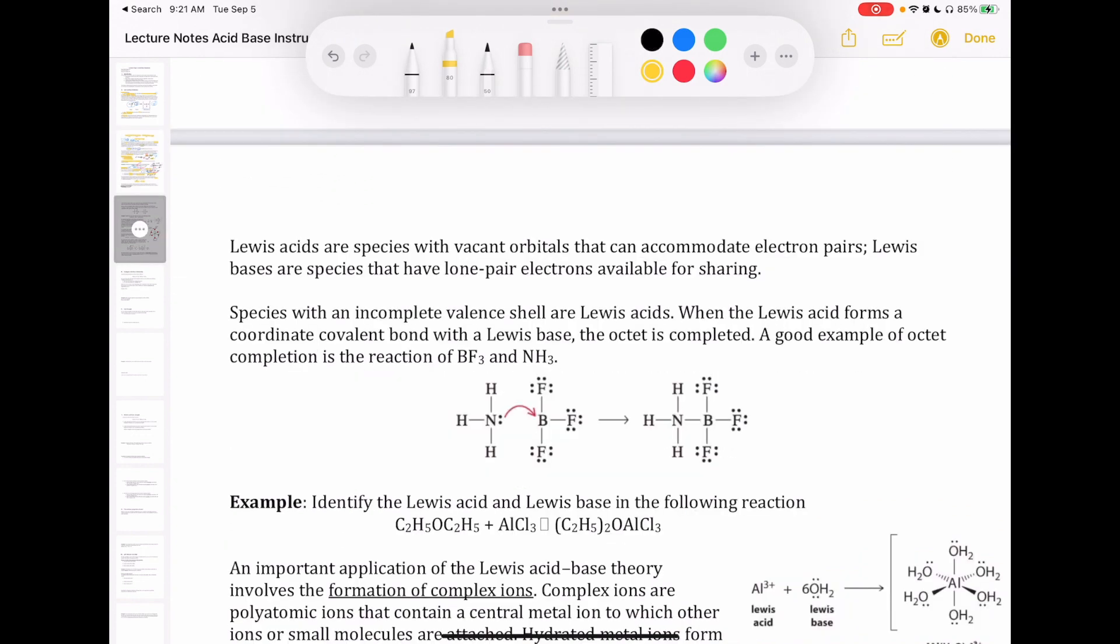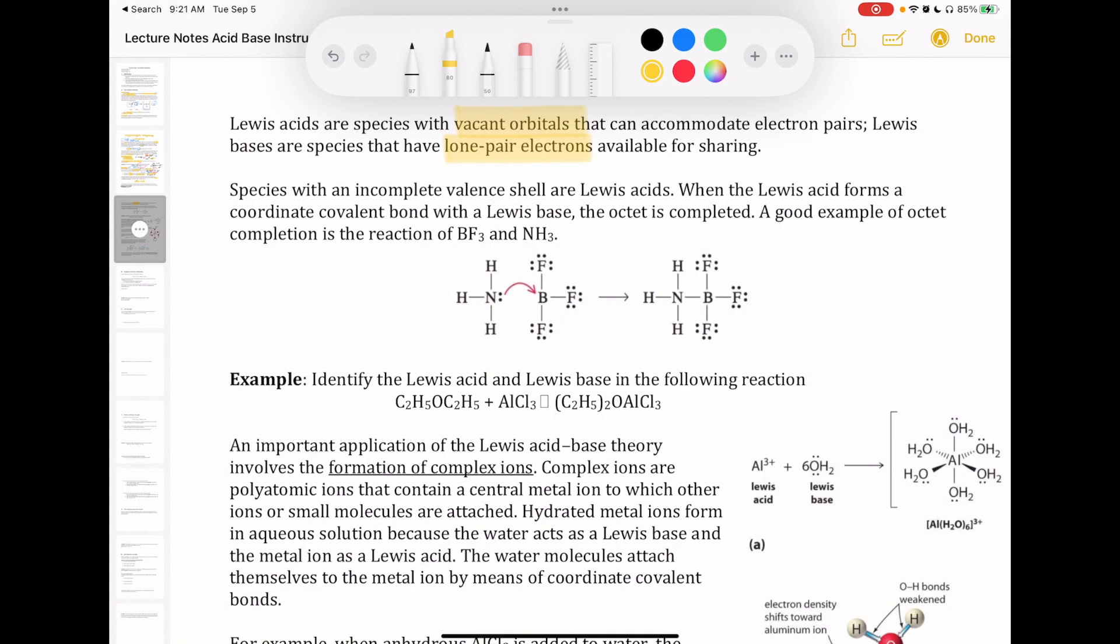Now, the Lewis base is any species that has a lone pair of electrons that it can share. It could either be just a species that's negatively charged, like an anion, or it could be something like oxygen in water that has some lone pair of electrons. The Lewis acid, on the other hand, are species that have some empty orbitals that can pull in or host that electron pair that's being given by the base. So anybody with an incomplete valence shell could act, in theory, as Lewis acids.